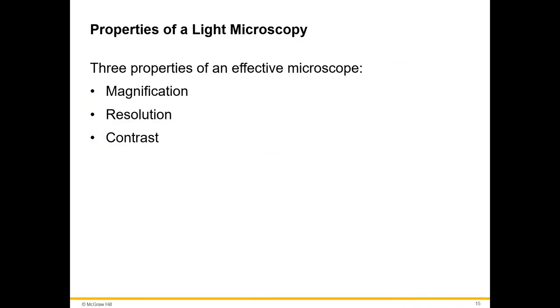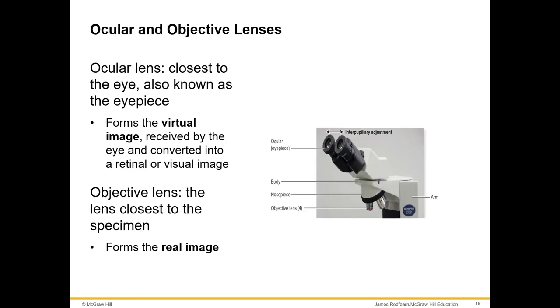In this session I'm going to talk about how a microscope works. There are three main properties of an effective microscope: magnification, resolution, and contrast. The ocular and objective lenses are combined to determine magnification.